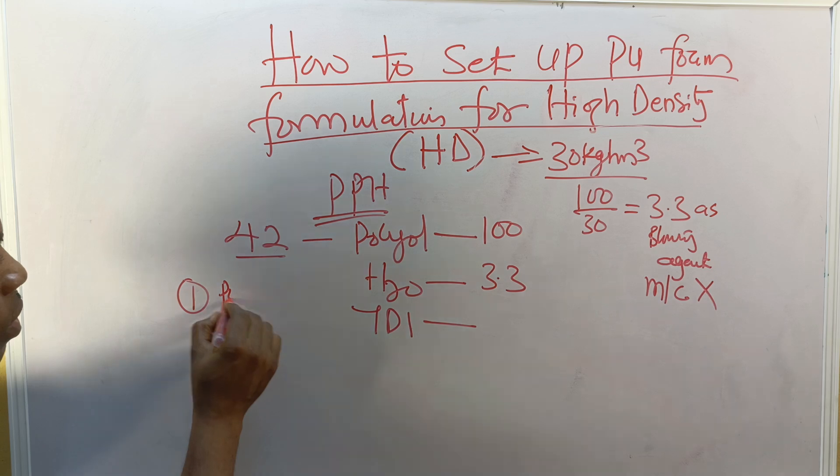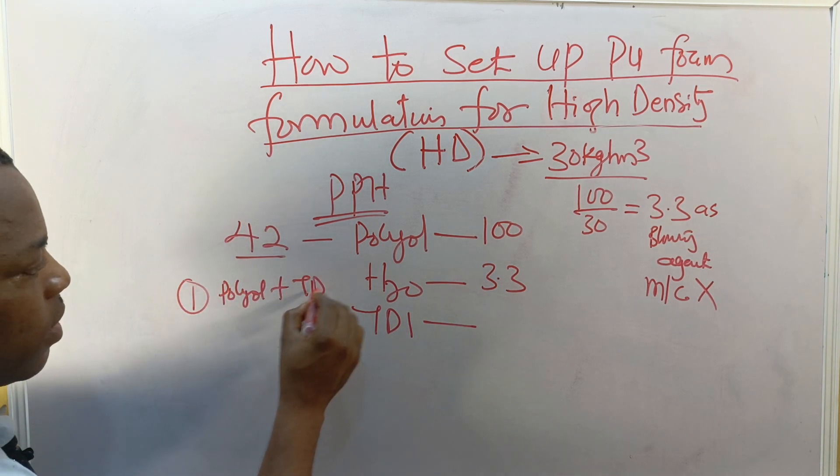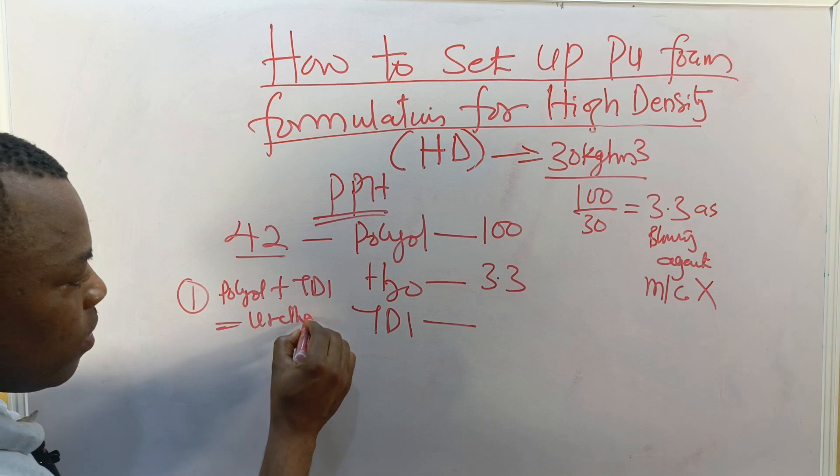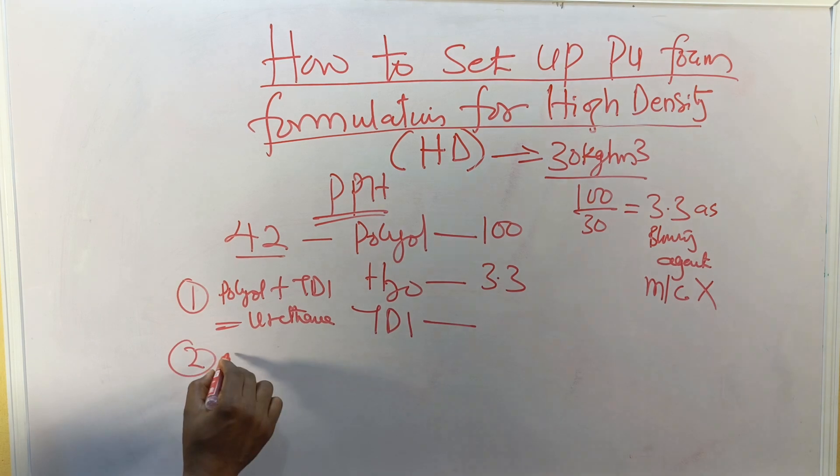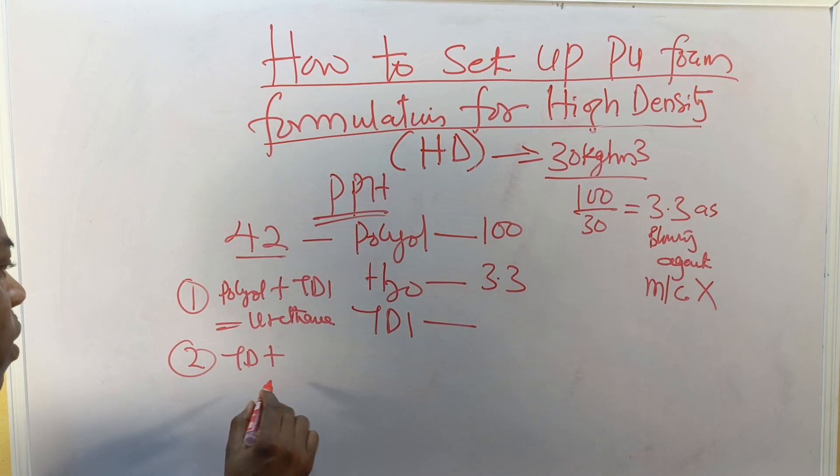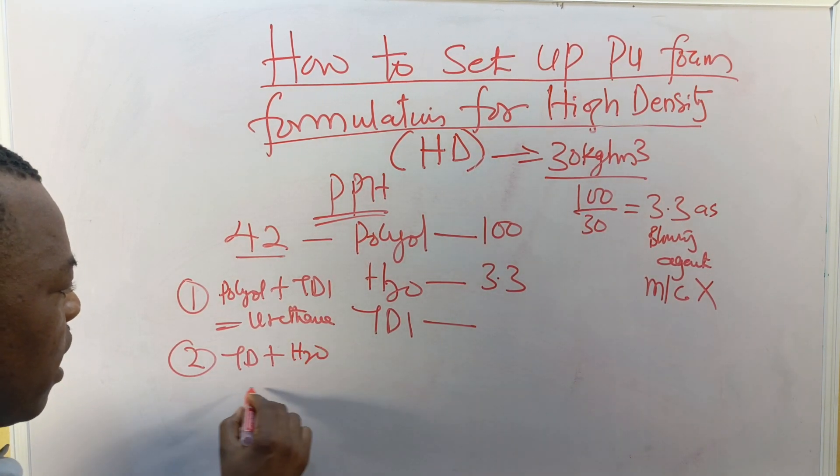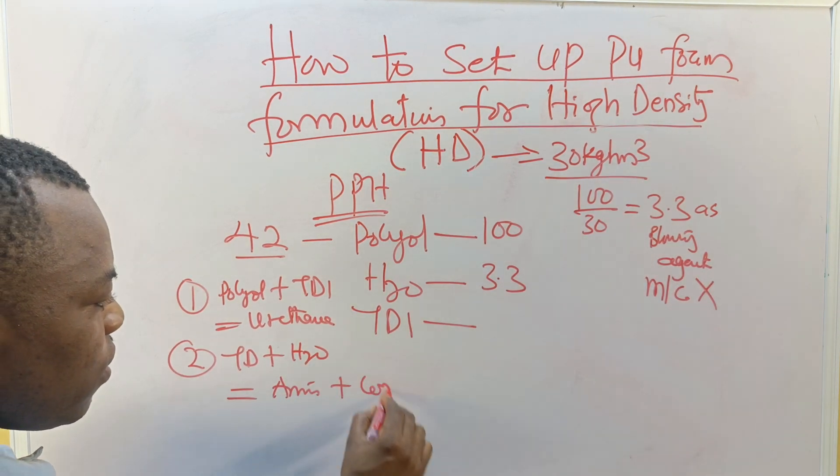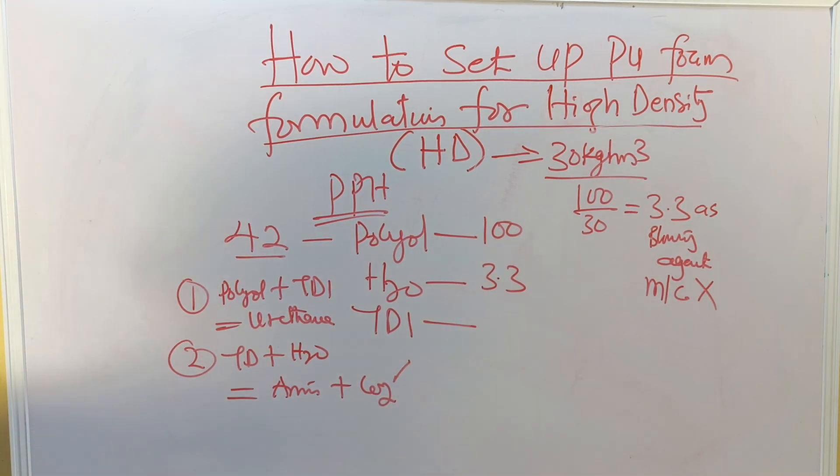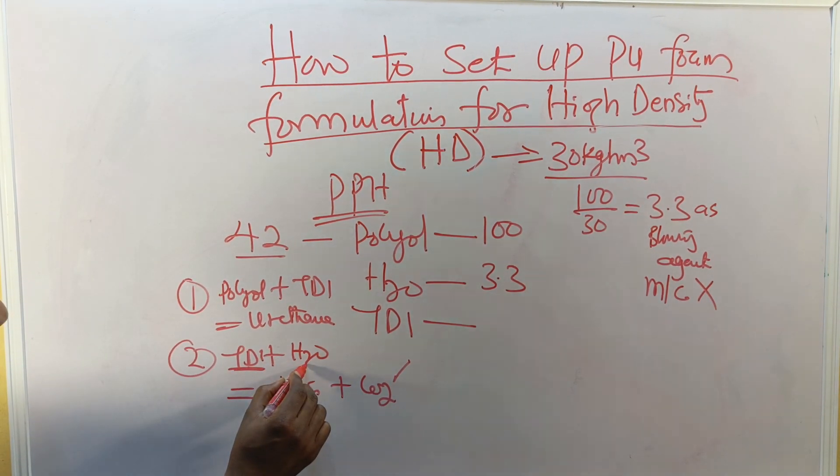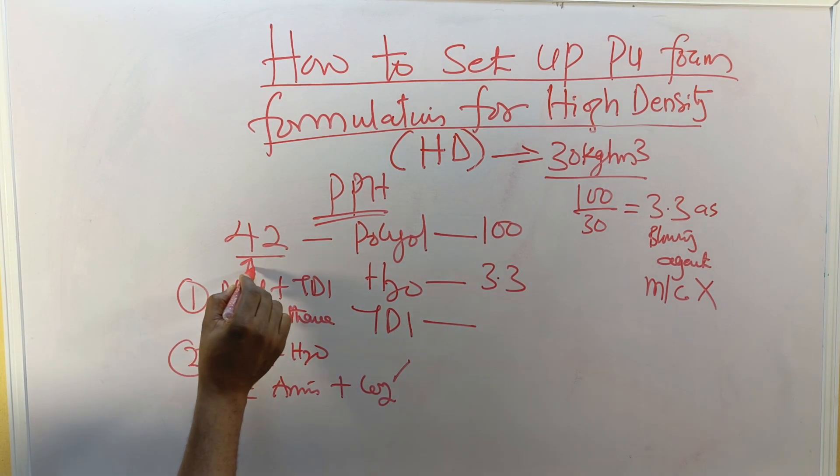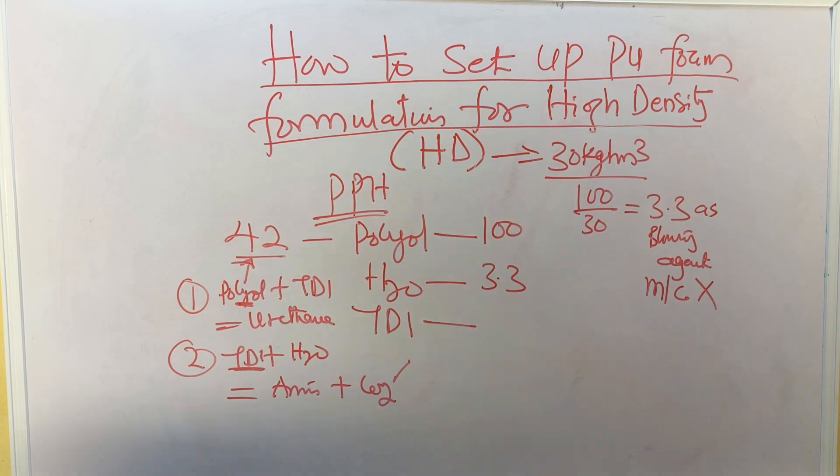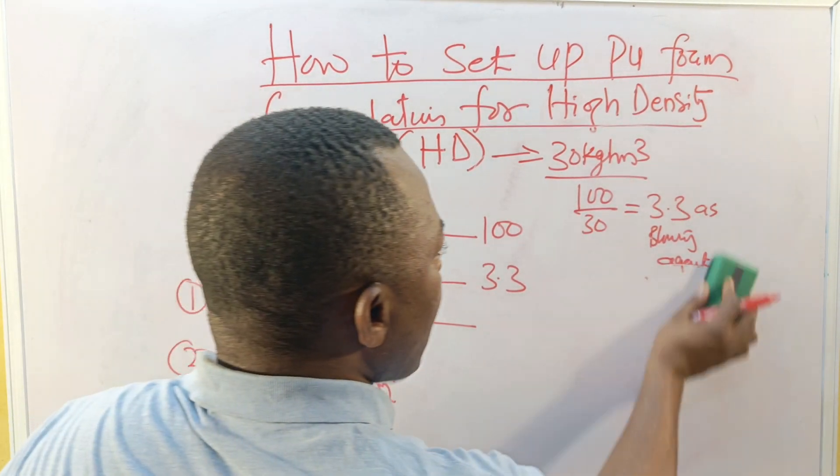The amount that reacts with water and the amount that reacts with the polyol. Looking at my previous lesson you see the reaction how it occurs. One, polyol plus TDI gives us urethane. Two, TDI plus water gives us amine plus CO2. So this is TDI that reacts with water, this is TDI that reacts with polyol. This polyol carries the OH value.